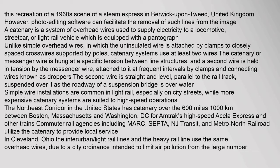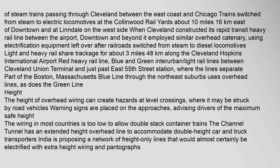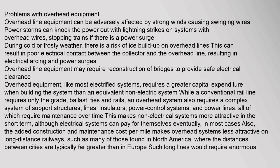Simple wire installations are common in light rail, especially on city streets, while more expensive catenary systems are suited to high-speed operations. The Northeast Corridor in the United States has catenary over 600 miles (approximately 1,000 km). Steam trains passing through Cleveland between the East Coast and Chicago switched from steam to electric locomotives at the Collinwood rail yards, about 10 miles (16 km) away.